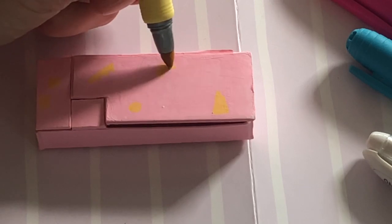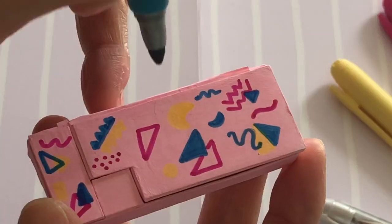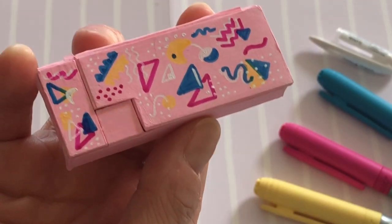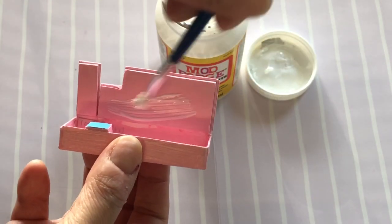Now for the fun. Referencing an image from the AG website, draw in the fun 80s graphics with bright markers. For that extra pop, use a white gel pen. Seal your pencil box with a few coats of matte Mod Podge for better play durability.